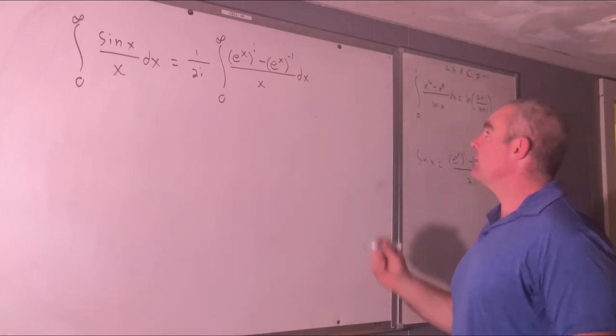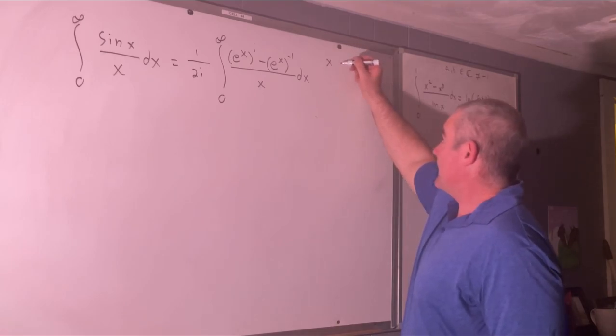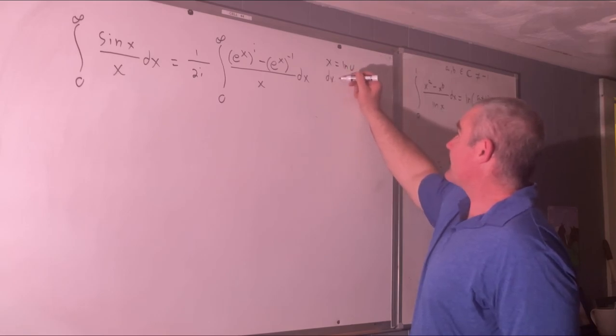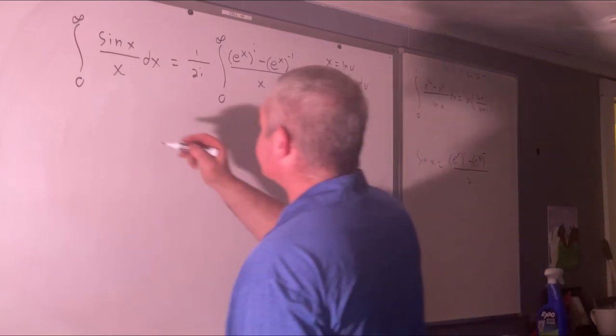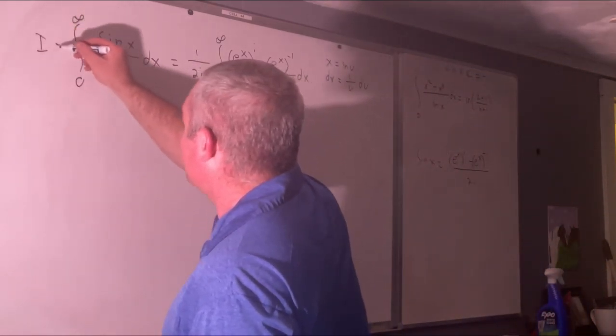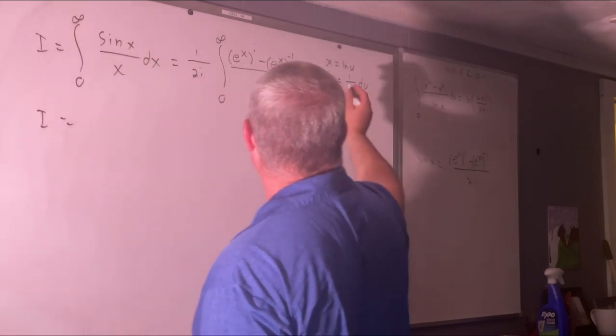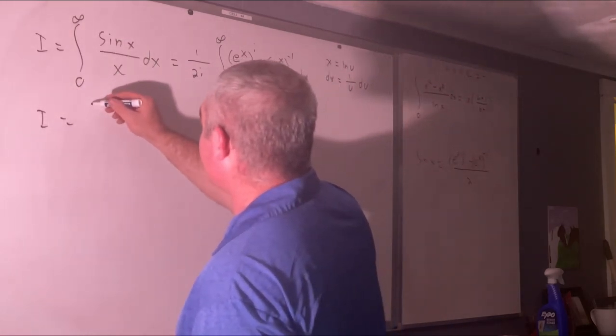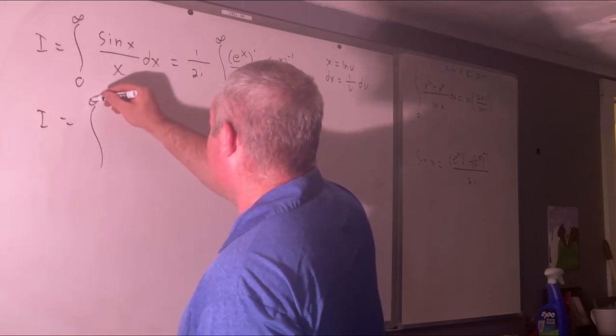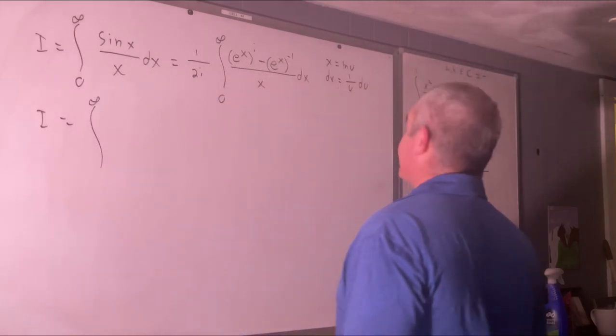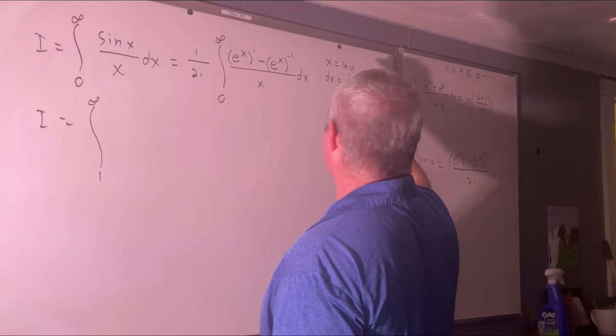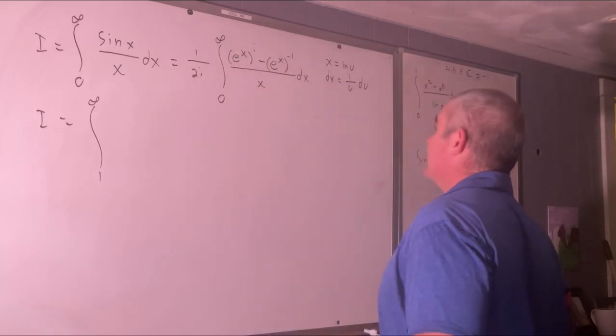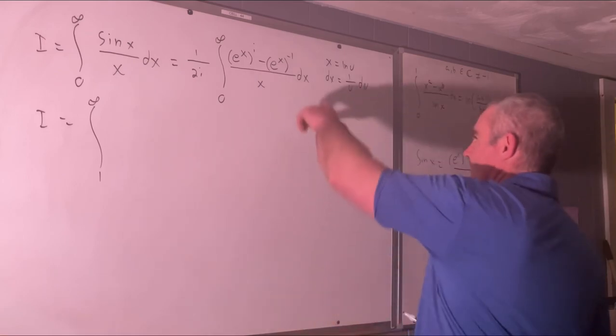And now we will let x equals natural log u, dx equals 1 over u du, giving us, and we'll call this i, giving us i is equal to, well, let's see, x is the natural log of u. So infinity is the natural log of infinity, but 0 is the natural log of 1. We're not using that one. We're using this one.